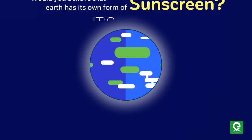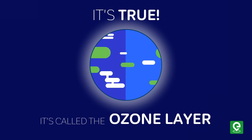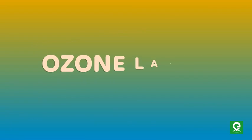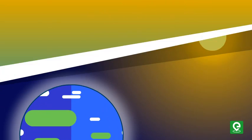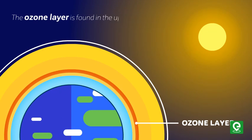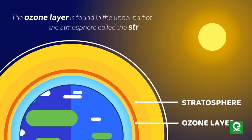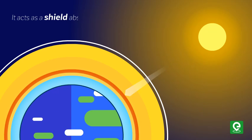Would you believe that Earth has its own form of sunscreen? It's true. It's called the ozone layer. Let's learn about the ozone layer and its depletion. The ozone layer is found in the upper part of the atmosphere called the stratosphere and acts as a shield absorbing ultraviolet radiation from the sun.